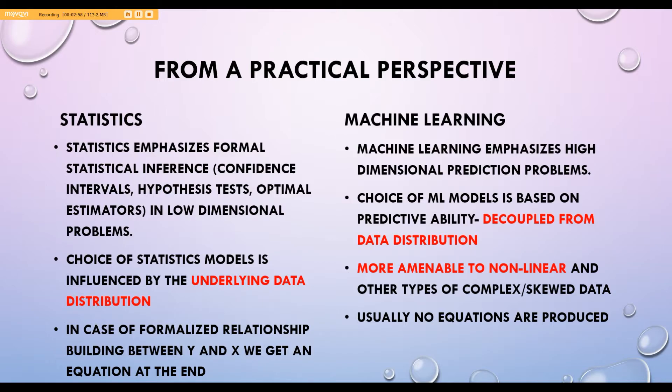One of the key things that works for me when I have to decide between statistical models and machine learning, and that may well work for you as well irrespective of your domain, is that choice of statistical models is influenced by underlying data distribution. This is something we saw a lot in the previous sections—we devoted a lot of time to checking whether our data were normally distributed or not, if the errors were normally distributed or not.